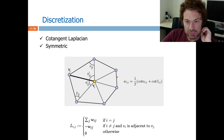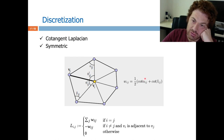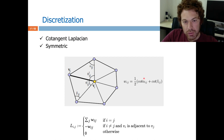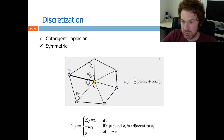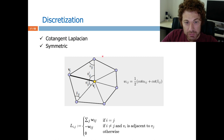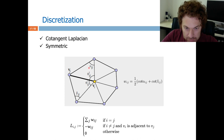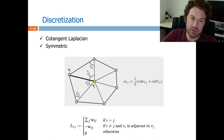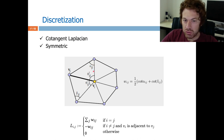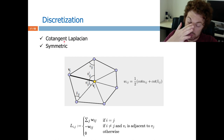Another way to solve the negative weight problem: obtuse triangles occur with bad triangulation. So you can remesh your mesh in the beginning to get a good triangulation, then apply the cotangent Laplacian — that's also an option.